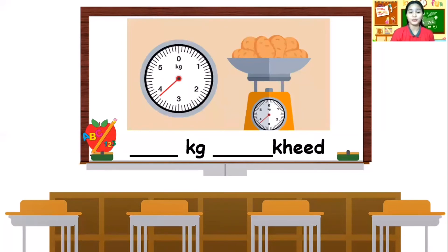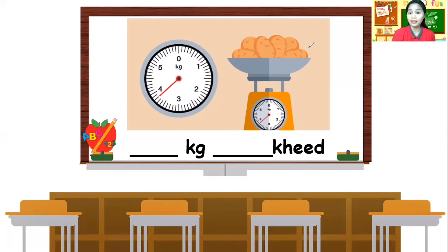Next object is a potato. Very good! Let's identify the mass of the potato. The arrow is pointing — look at number three, and then count how many hg: one, two, three, four, five, six, seven, and eight. Very good! So what is the mass of the potato? Three kilogram and eight hg. Good job!